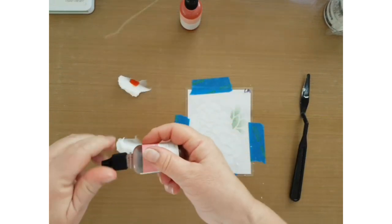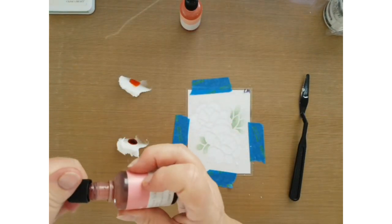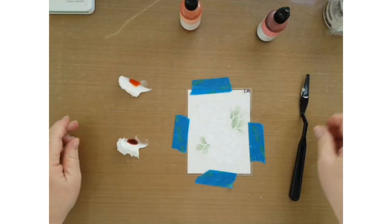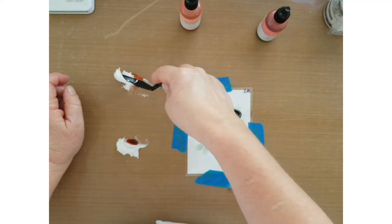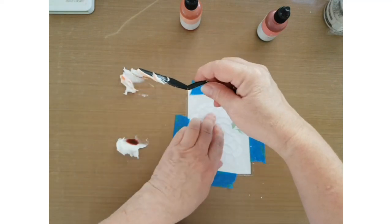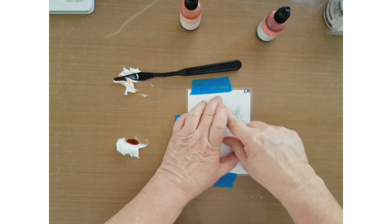Two drops of the re-inkers, because I really don't want it to be too wet. If it gets too wet then it seeps underneath the stencil and we really want it to be quite flat.